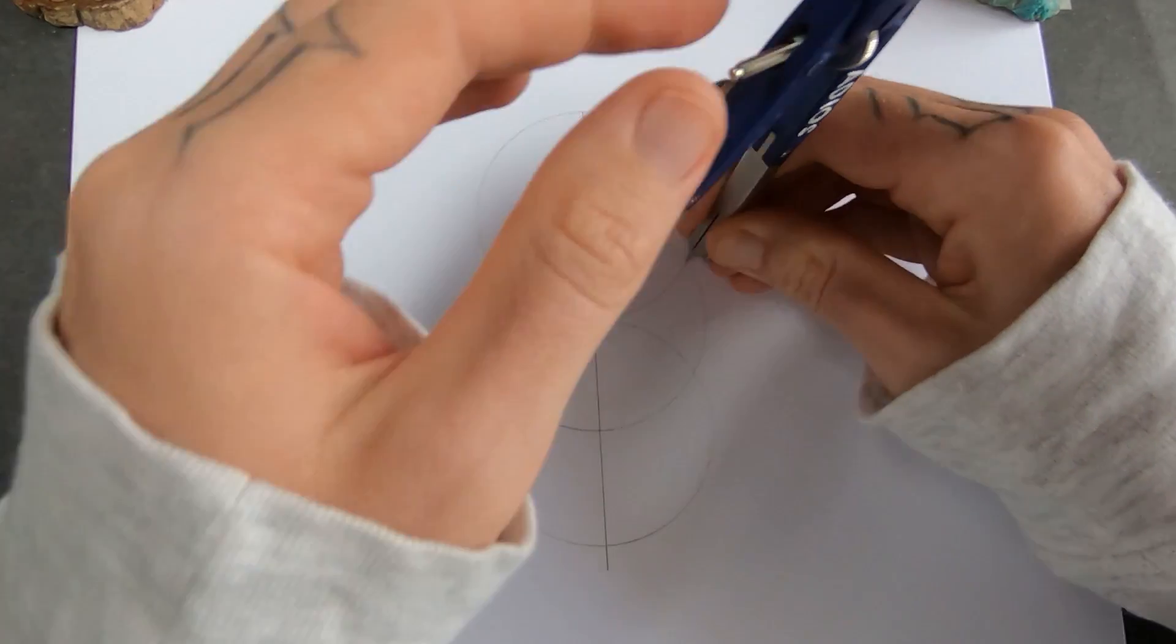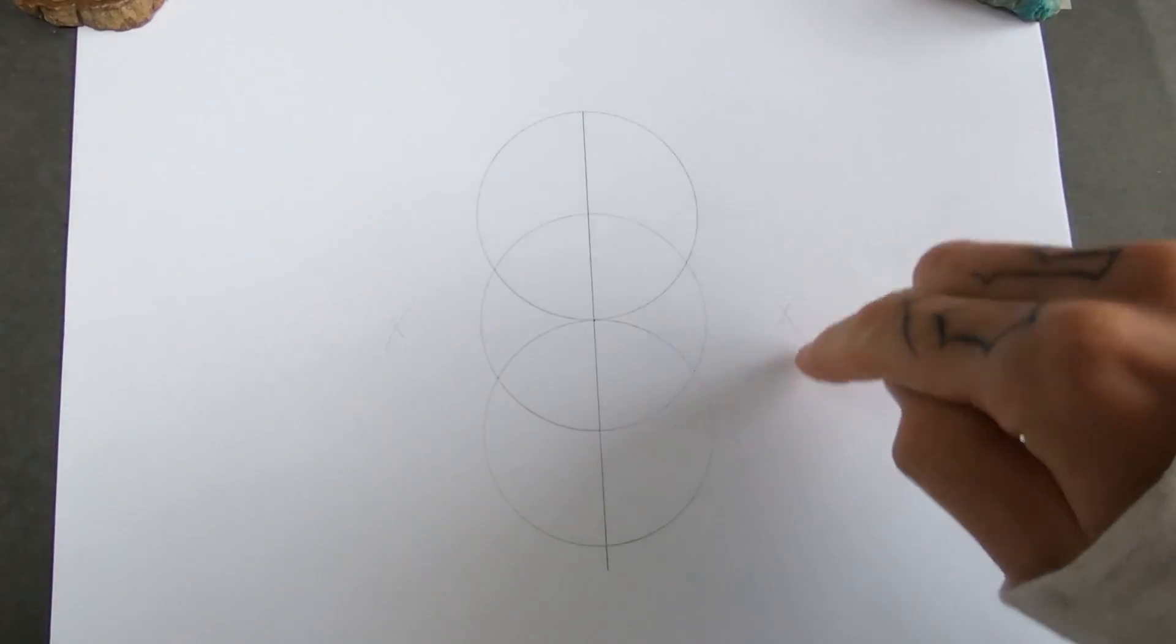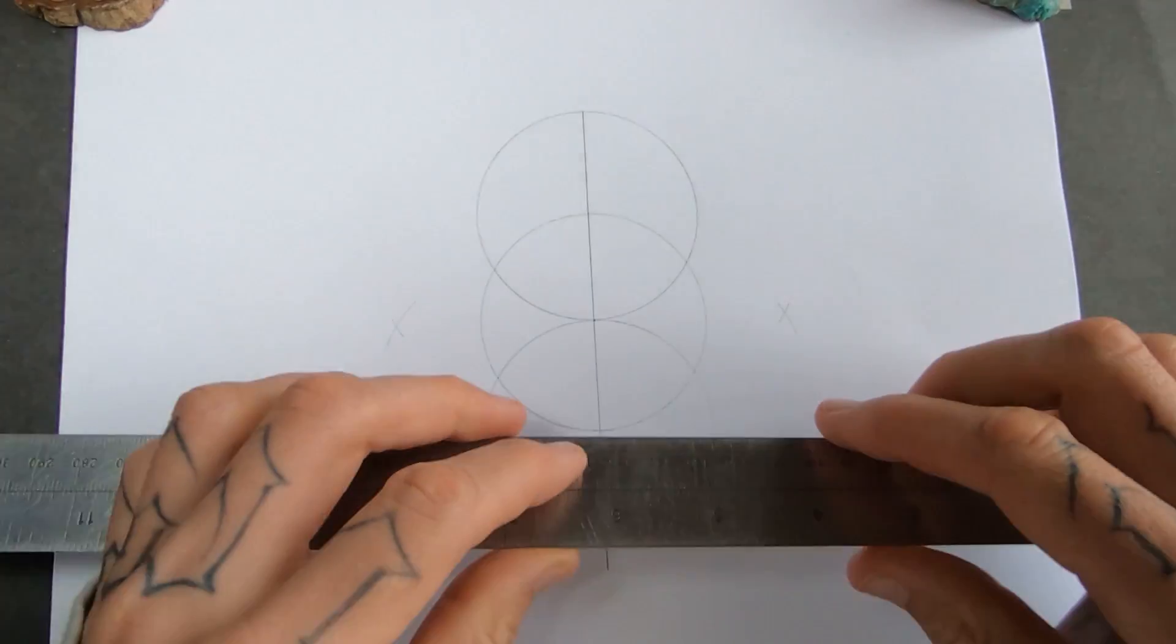Yeah, I'm going to use the seed of life to divide it into 4. So if you imagine these circles went all the way around, it would be the seed of life.